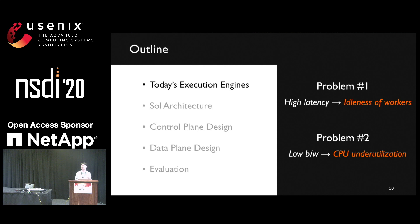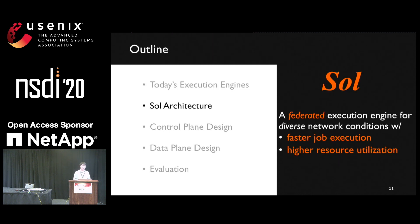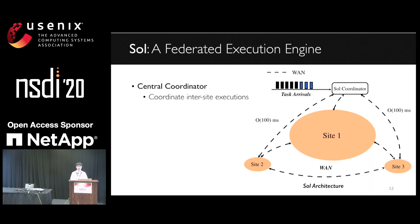To recap, both high latency and low bandwidth can lead to CPU underutilization. However, this inefficiency is bound to the task itself, which can only be solved in the execution layer. To tackle this inefficiency, in this talk we introduced SOAR. SOAR is a federated execution engine for diverse network conditions. It can provide faster job execution and high resource utilization. Next, we will present our system architecture.